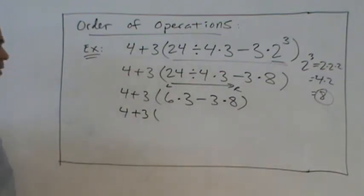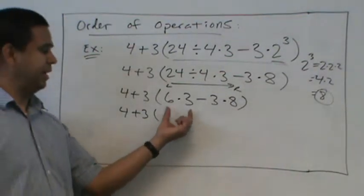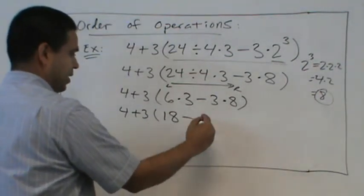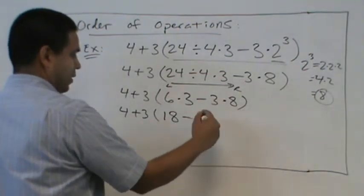In the parentheses still, what do we do? Multiply. Multiply. Yeah. 6 times 3 is 18. We get 24.